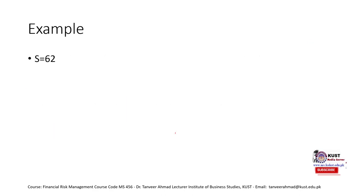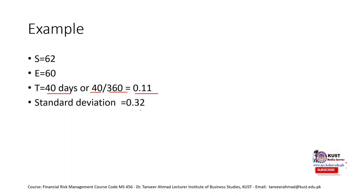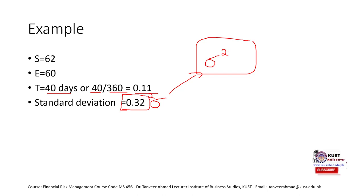The data from this question: spot price is 62, exercise price is 60, time period is 40 days, so 40 by 360 equals 0.11. Standard deviation is 0.32. What you need to remember is that standard deviation is denoted by sigma, but in the formula we need sigma squared. Whenever you input volatility into the formula, check whether the term given is standard deviation or variance. If it is standard deviation, take the square of that amount. If it is variance, it is already in squared form so do not square it again. In this case we will take the square of 0.32. Our risk-free rate is 4 percent or 0.04.